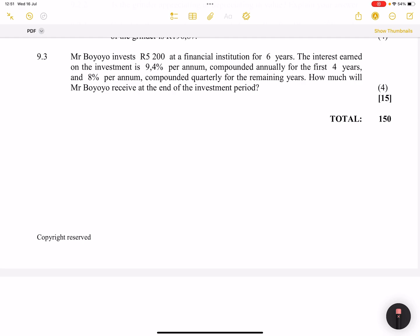Right? So there we are. Let's just draw a timeline for ourselves. Very important for us to always interpret this in terms of timelines. So at T0, Mr. Boyoyo invests 5,200. Now, what do they say to us? He's going to do this for six years.